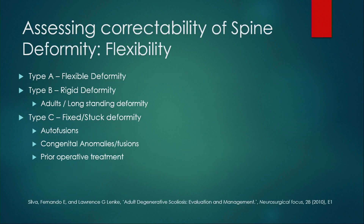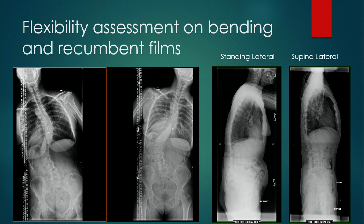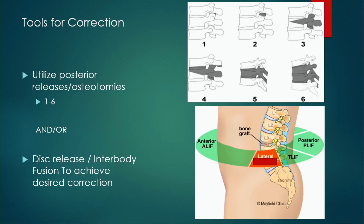The best framework when thinking through a deformity is: is this a flexible, rigid, or fixed/stuck deformity? This is probably the most important factor in determining how to approach the pathology. Flexibility can be assessed on bending films — either standing or supine — and sagittal correctability by comparing standing to supine lateral films. We can also look at the opportunistic lateral from the CT scout film.